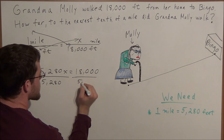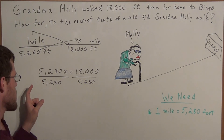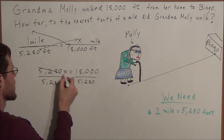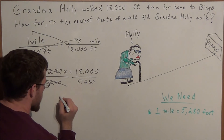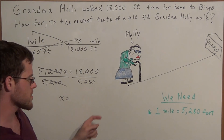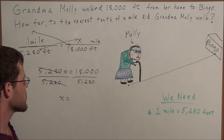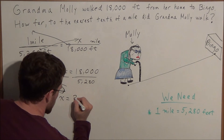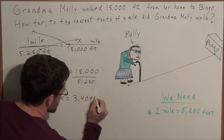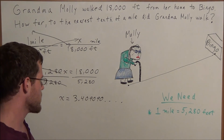On the left-hand side, 5,280 divided by 5,280 is 1, so those values will cancel out. And we have x is equal to — when we simplify this in our calculators, 18,000 divided by 5,280, you should get 3.409090. And that pattern is going to repeat, so we'll stop it here.